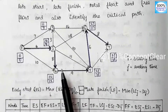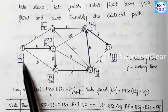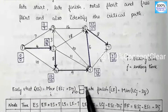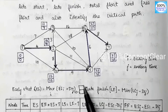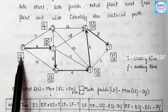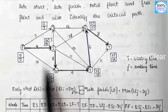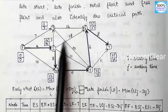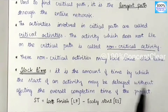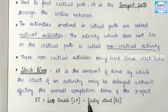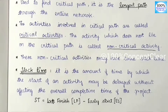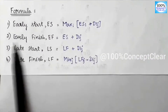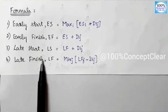In CPM, there are four time values. Early Start (ES) is equal to the maximum of (ES_i + D_ij), where i is the starting activity and j is the ending activity. Early Finish is Early Start plus duration. Late Start (LS) equals Late Finish minus D_ij. Late Finish is the minimum of (LF of ending activity minus duration).